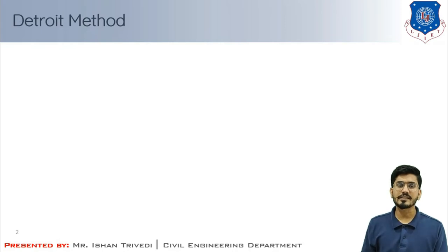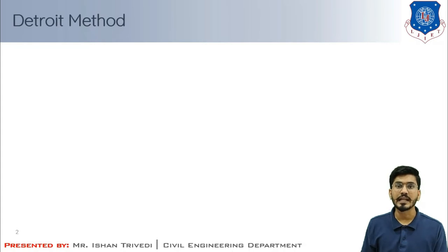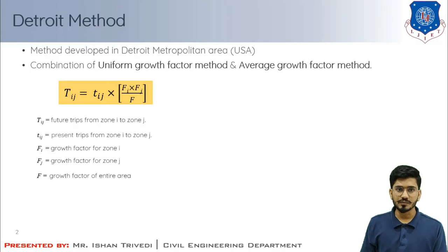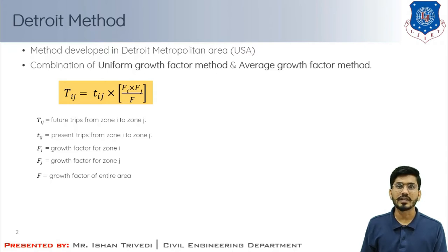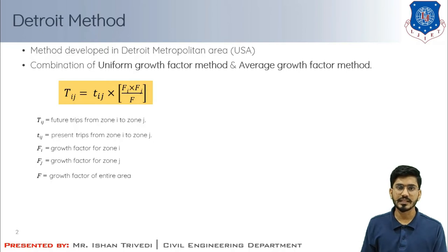Let us first understand what the Detroit method is. This method was first adopted in the Detroit metropolitan area in the USA for trip distribution study in 1956. The model assumes that the future trips from zone I to zone J are proportional to the growth factor of zone I (Fi) multiplied by the growth factor of zone J (Fj), divided by an average growth factor for the entire area. The representative equation is: capital Tij equals small tij times Fi times Fj divided by F.